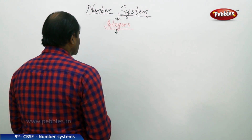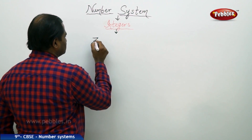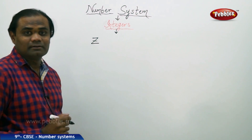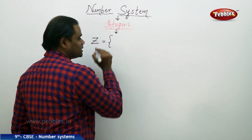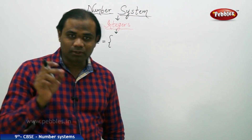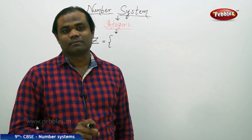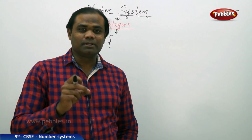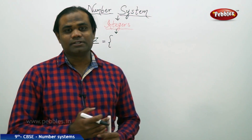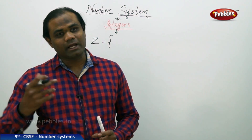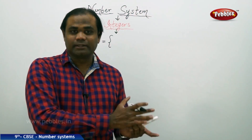Integers are denoted by capital Z, and it is nothing but the set of all numbers — natural numbers and whole numbers — which are both positive and negative. In the most simple understanding, the set of integers is the natural numbers and the whole numbers taken both in the positive side and the negative side.